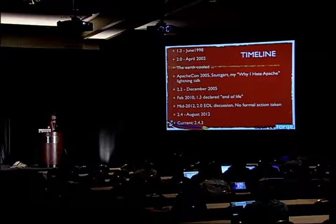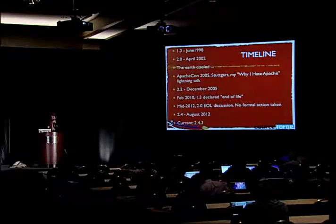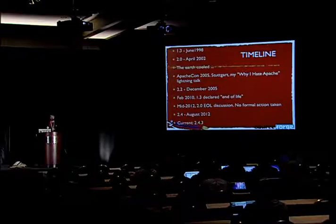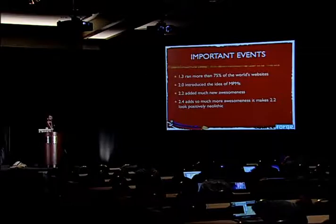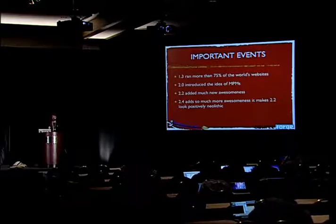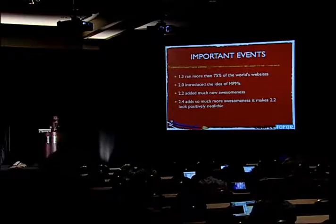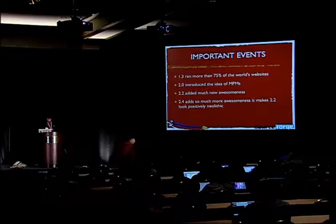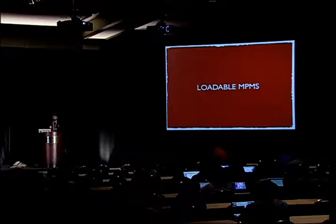About seven and a half years ago in Stuttgart at ApacheCon, I gave a presentation called 'Why I Hate Apache,' and I listed a bunch of things that really irritated me about the Apache web server. It was a very tongue-in-cheek talk, and every single thing I mentioned in that presentation has been addressed in the 2.4 release. I'm going to go through some of those things. Unfortunately, having only 45 minutes, I don't have time to cover everything in depth — it's a very compelling new release, and if you haven't yet upgraded to 2.4, I hope that by the end of this you'll be persuaded.